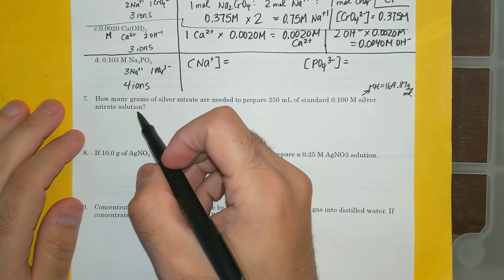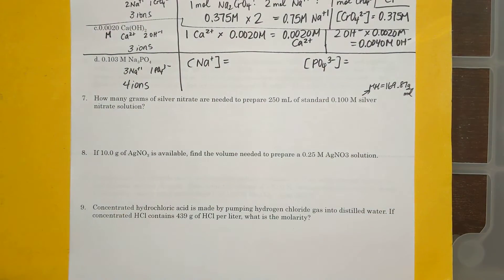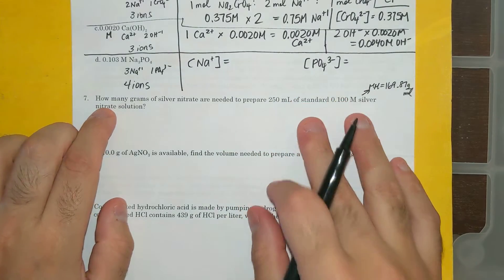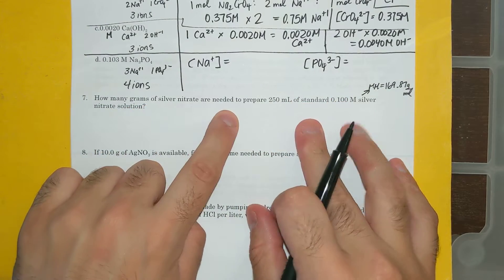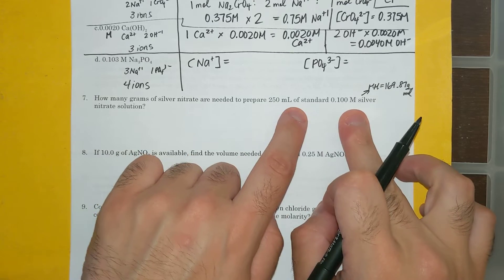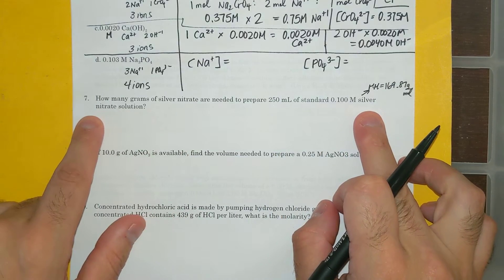Alright, hey again, Honors Chemistry. Another variation of using the molarity equation is something like number seven. It says how many grams of silver nitrate are needed to prepare 250 milliliters of standard 0.1 molar silver nitrate solution.